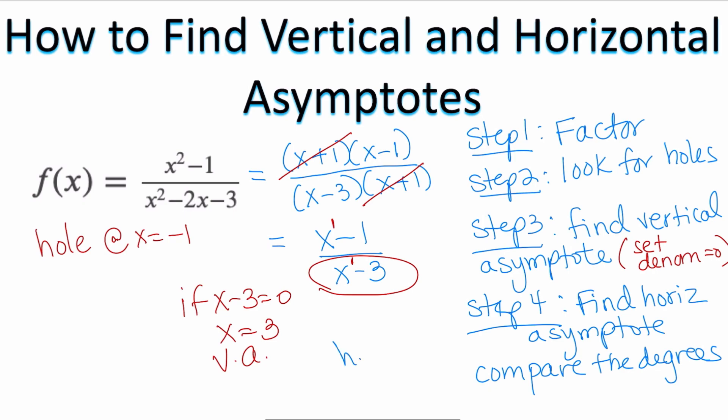So the horizontal asymptote is going to be y equals the leading coefficients, which are the numbers in front. Since they don't have any, it's just 1 over 1. So y = 1 is going to be the horizontal asymptote.